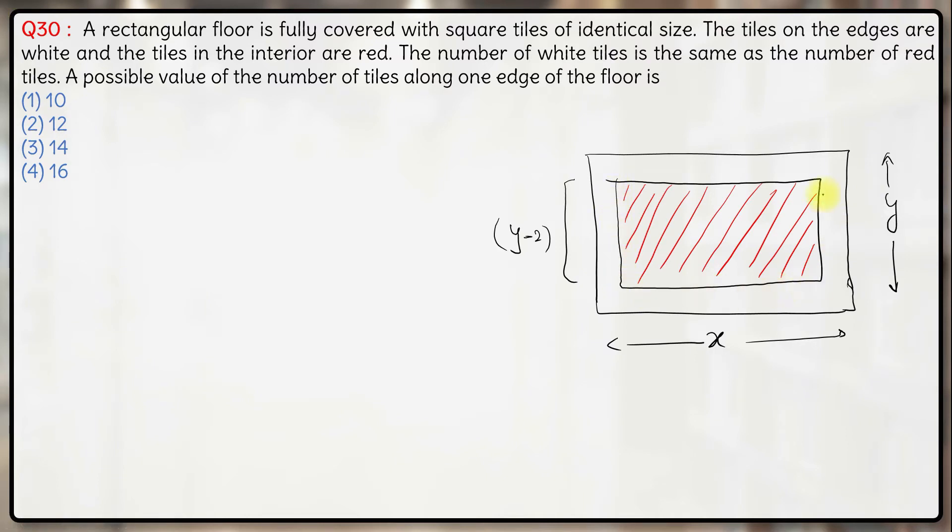Then for the red region the number of tiles along this edge will be y minus 2, y minus 1 minus 1, so y minus 2. Similarly this will be x minus 2 here.